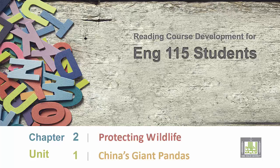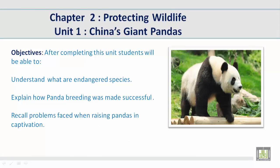Reading Course Development for English 115 Students. Chapter 2, Protecting Wildlife, Unit 1: China's Giant Pandas. Objectives: After completing this unit, students will be able to understand what endangered species are, explain how panda breeding was made successful, and recall problems faced when raising pandas in captivity.